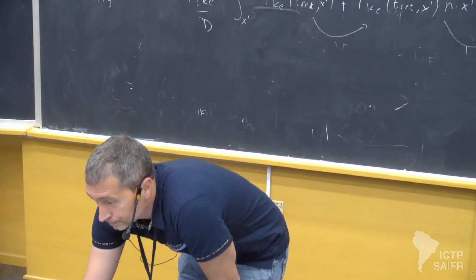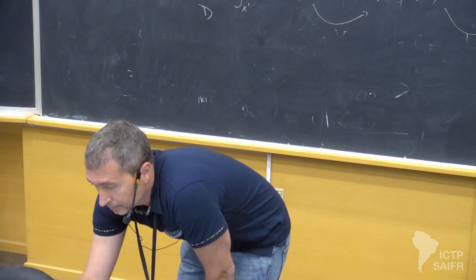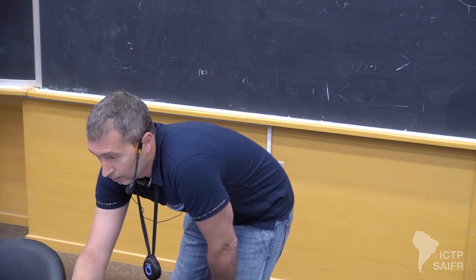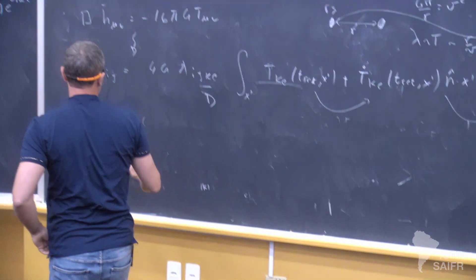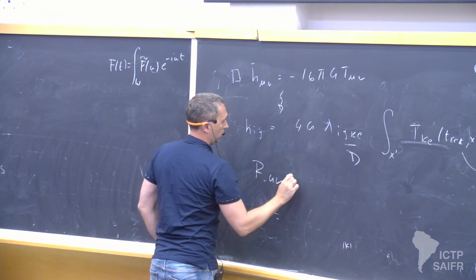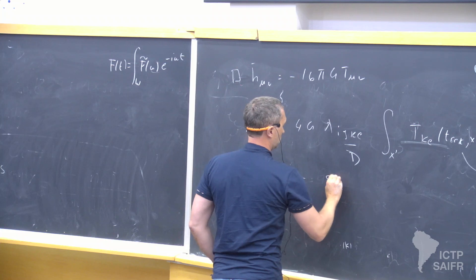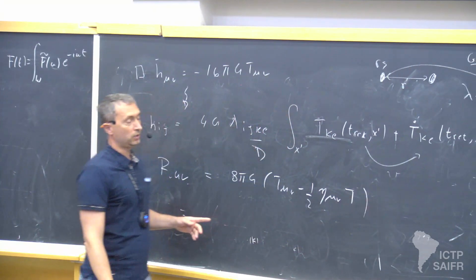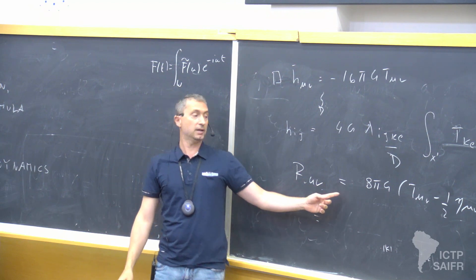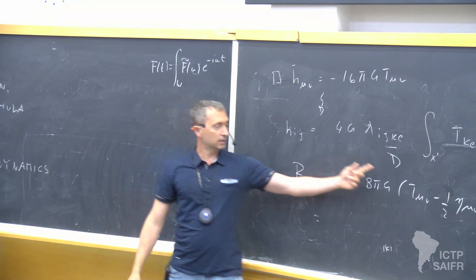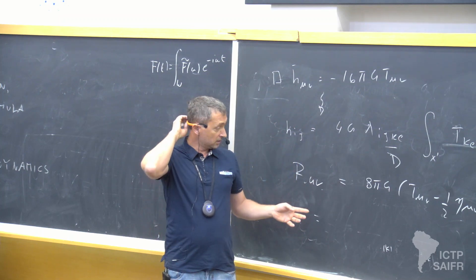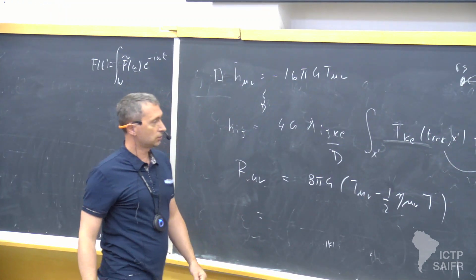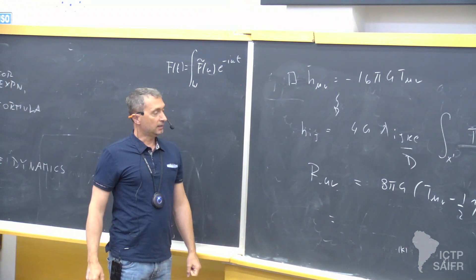Let's go to the energy momentum tensor now. By the way, the notes are not updated with the latest bunch of exercises — I will do that right after this lecture. So for the energy momentum tensor of gravitational waves, we have a very simple recipe. We rewrite the Einstein equation in the trace-reversed form. This is just the trace-reversed Einstein equation, fully equivalent to the standard one. The Einstein tensor is Ricci tensor minus one-half Ricci scalar.